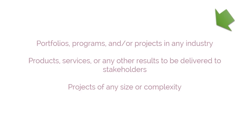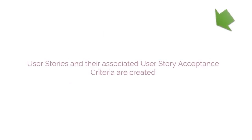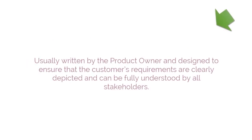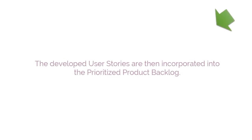Let's begin with understanding briefly each of the processes that is part of the plan and estimate phase. The first process is create user stories. In this process, user stories and their associated user story acceptance criteria are created. User stories are usually written by the product owner and are designed to ensure that the customer's requirements are clearly depicted and can be fully understood by all stakeholders. User story writing workshops, which involve Scrum team members creating the user stories, can be held. The developed user stories are then incorporated into the prioritized product backlog.